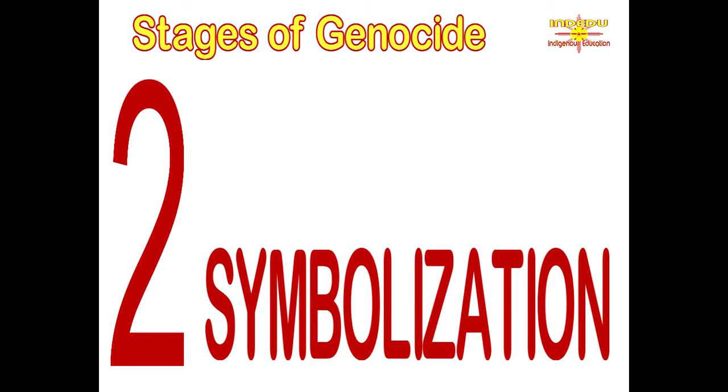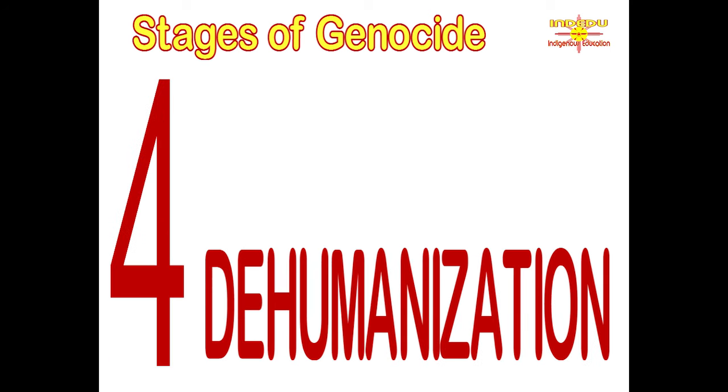This show is going to be very interesting. We're actually going to combine two stages today because of how much they relate to each other. We talked about the 10 stages and named them — the first stage was classification. Today we're going to talk about the second stage, symbolization, and also the third stage, dehumanization. So let's offer the definition for symbolization as defined in the 10 stages of genocide.